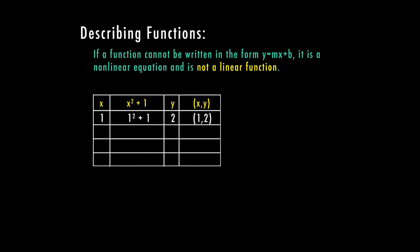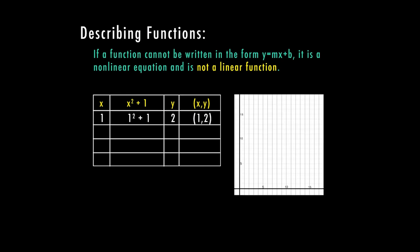If I first plug in a 1, 1 squared plus 1 is 2. So my first ordered pair is 1, 2. So I'm going to go ahead and put a point here at 1, 2. Then when I plug in a 2, I have 2 squared plus 1. So my output is 5. So if I go over here to 2, I'm going to go up to 5.